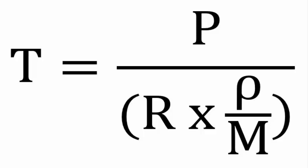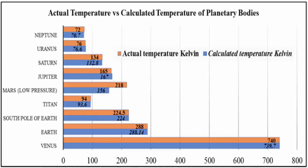Using commonly available gas parameters for various planets—Neptune, Uranus, Saturn, Jupiter, Mars, Titan, South Pole of Earth, Earth in general, and Venus—in brown you've got the actual temperature in Kelvin and in blue the calculated temperature using this formula. As you can see, they're all spot on apart from Mars.